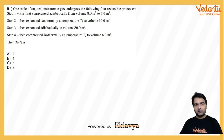One mole of an ideal monoatomic gas undergoes the following four reversible processes. Step 1, it is first compressed adiabatically from volume 8 to 1, then expanded isothermally at temperature T1 to volume 10 meter cube.